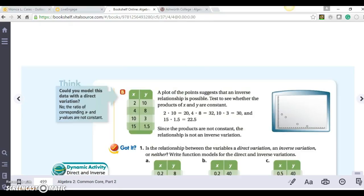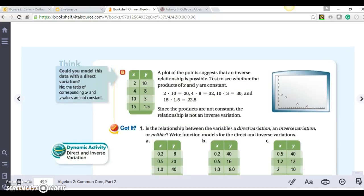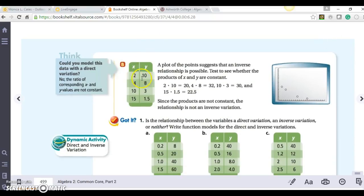Let's go on to part b. Here we have 2, 10; 4, 8; 10, 3; 15, 1.5. My x is increasing, my y is decreasing. So it might be an inverse variation. We can test that.